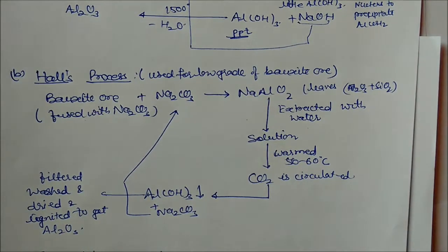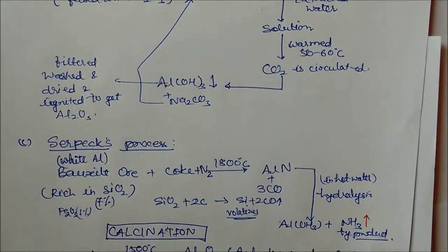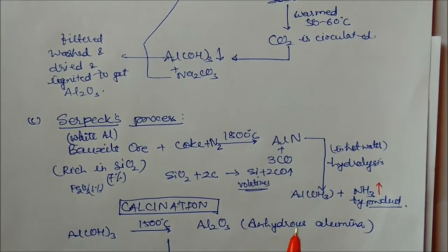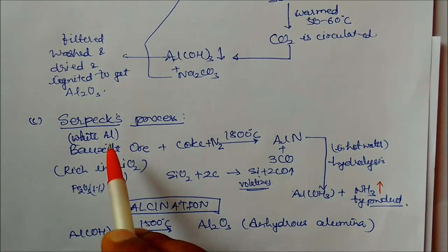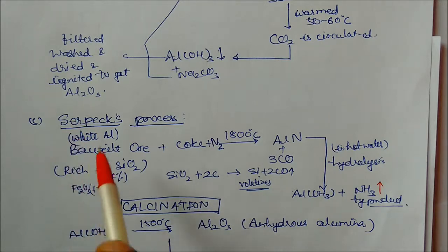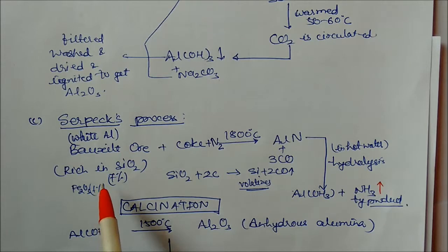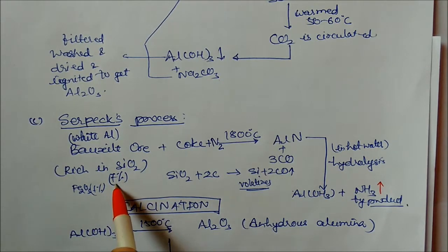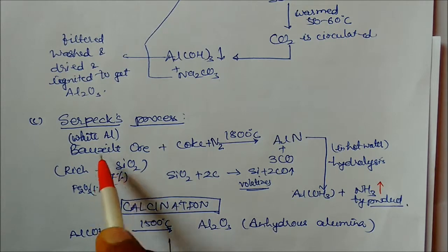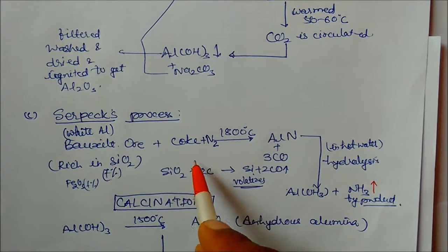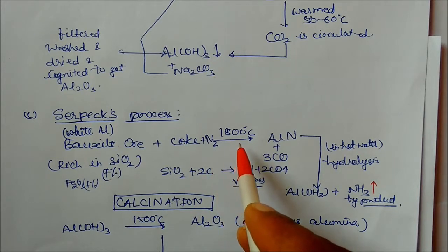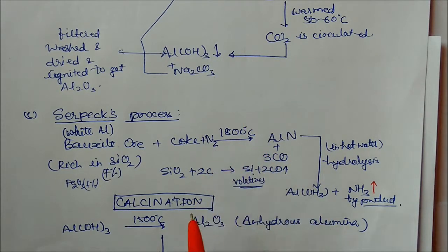The third process is Serpeck's process, used for white bauxite — bauxite rich in silica (about 7 percent SiO2) and with less iron oxide. This white bauxite is reacted with coke and air (containing nitrogen) at a temperature of 1800 degrees centigrade.